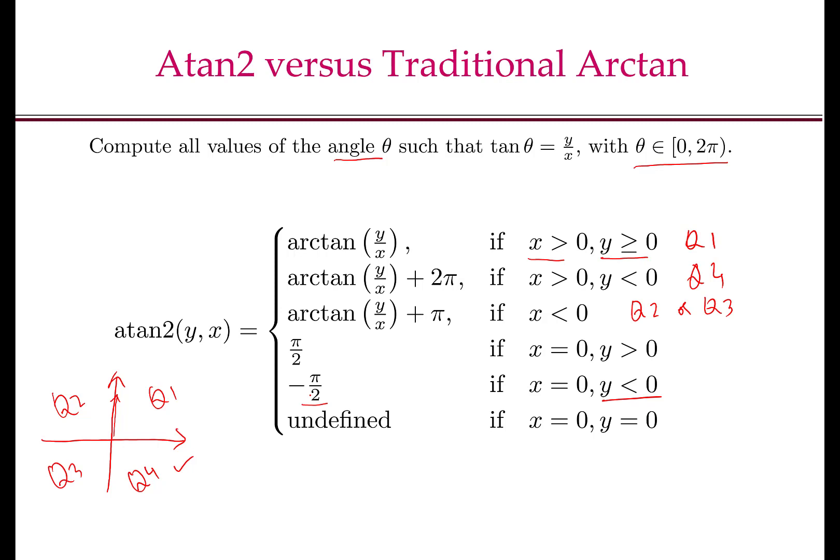So if you use Matlab or Python or C, C++, it will be available to you. So you should not use the arc tan function, but you should always use the atan2 function. If you are using a calculator, see what is the arc tan that it gives or the tangent inverse that it gives, and then based on where the point x comma y lies, you can use these rules to actually find out what should be that angle.